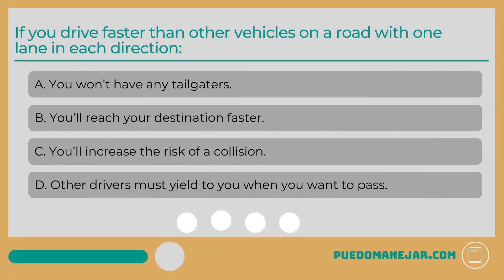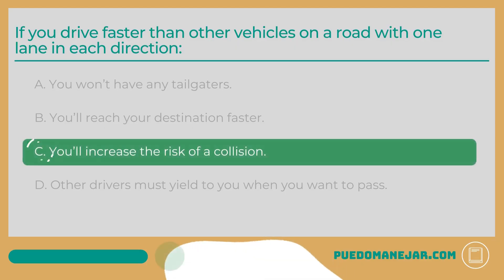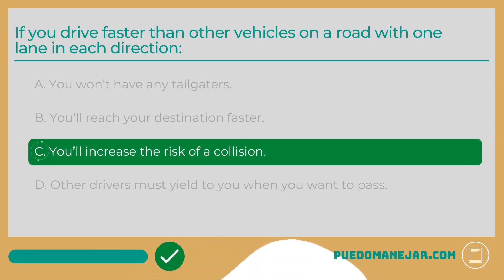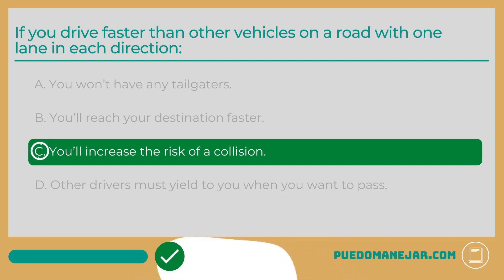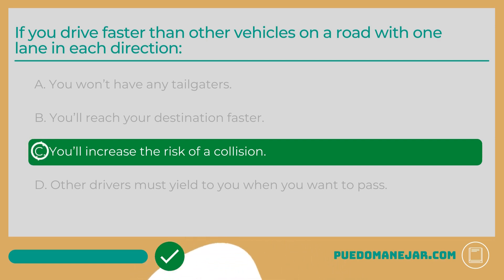If you drive faster than other vehicles on a road with one lane in each direction: A. You won't have any tailgaters. B. You'll reach your destination faster. C. You'll increase the risk of a collision. D. Other drivers must yield to you when you want to pass. The answer is C — you'll increase the risk of a collision. Driving faster than the normal flow of traffic and constantly passing other vehicles on two-lane, two-way roads greatly increases the risk of a collision. If traffic is busy, you should reduce your speed.